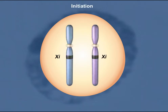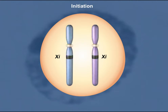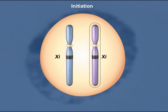Initiation occurs during embryonic development. Each X chromosome has an X-inactivation center, or XIC. The number of XICs are counted and one X chromosome is randomly chosen to remain active while the other is targeted for inactivation.